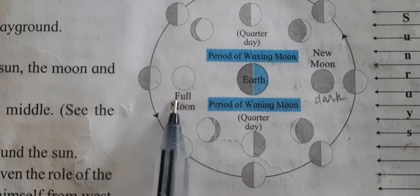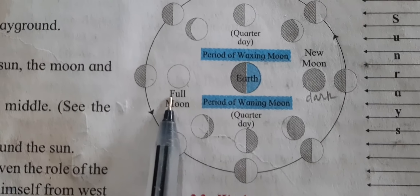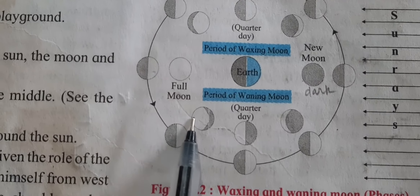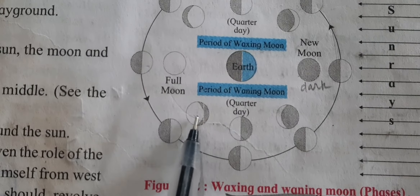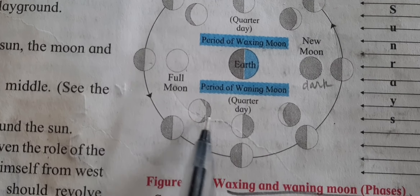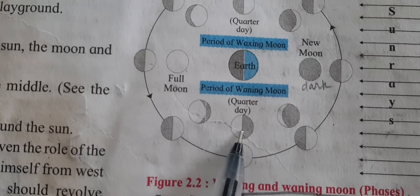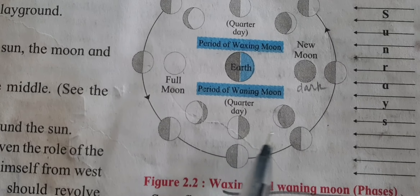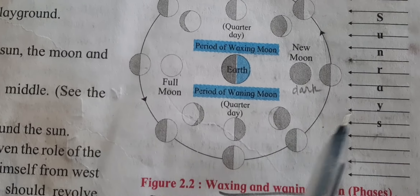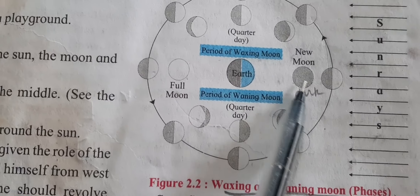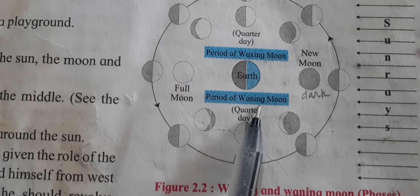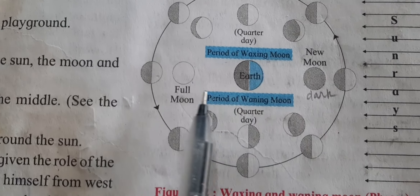Then we see the waning moon. Again it comes to the quarter day, then again the moon wanes, and then again the new moon arrives.